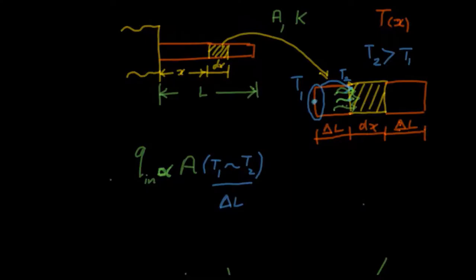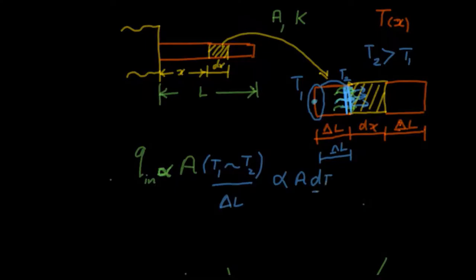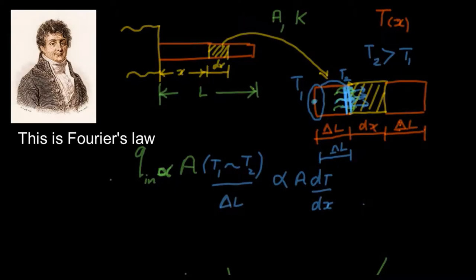Now, if we make del L very, very small — to the point where there is no distinction between the two layers — then we can rewrite this as A into dT, the temperature difference, divided by dx. So the magnitude of heat entering becomes directly proportional to A·dT/dx as del L becomes dx.